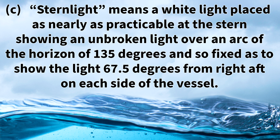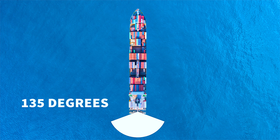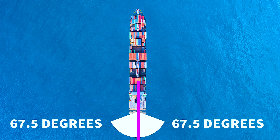Rule 21c states that the term stern light means a white light placed as nearly as practical at the stern, showing an unbroken light over an arc of the horizon of 135 degrees, and so fixed as to show the light 67.5 degrees from right aft on each side of the vessel. Looking at this diagram, all vessels must have a light on their stern. This light is called the stern light and must have an arc of visibility of 135 degrees, visible from 67.5 degrees from right aft on each side.